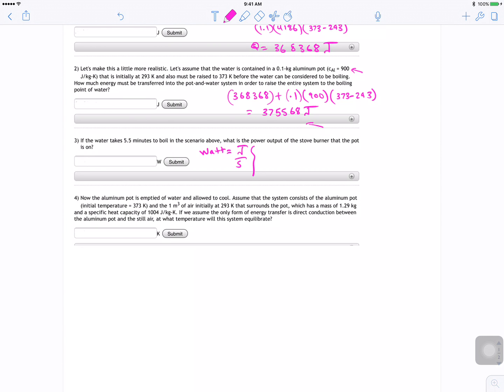So now we have the total amount which is 375,568, and that's joules. So now we need seconds, and we have the time which is 5.5 minutes, so we need to divide by 5.5 minutes, and then we change that to seconds because watts is per second, so it's 60 seconds divided by one minute. So you cancel the minutes out.